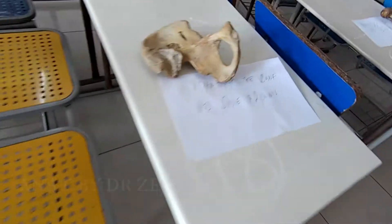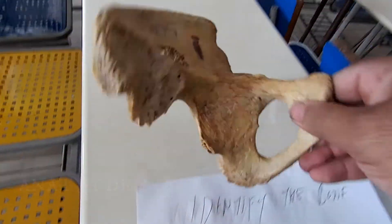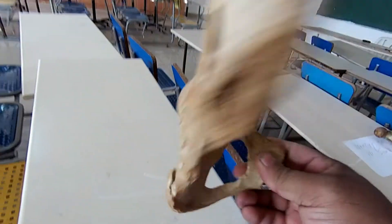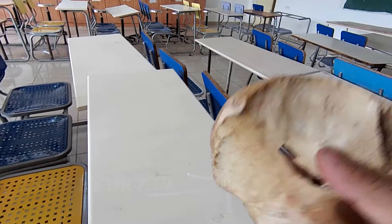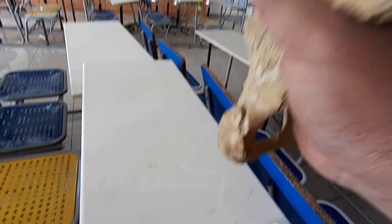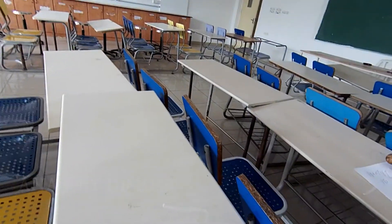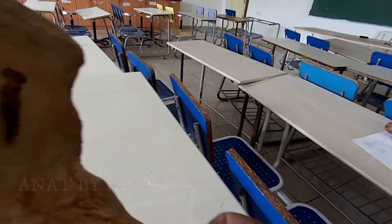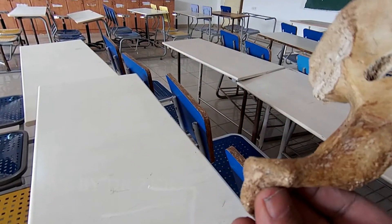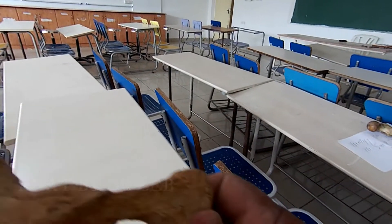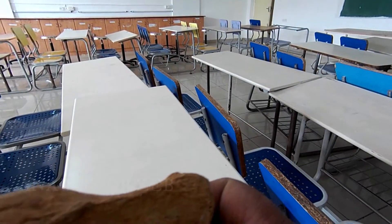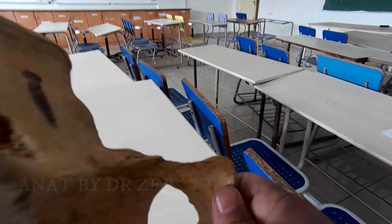Identify the bone — pelvis — very easy. The acetabulum is facing this side; this is the pubic bone I am holding. In anatomical position, this will be the left pelvis — it cannot be the right. Observe the ilium, the iliac fossa, and the obturator foramen. So it's the left pelvis.